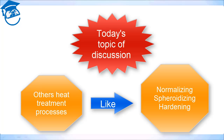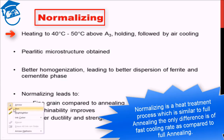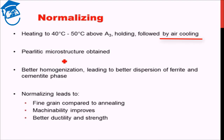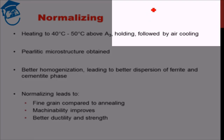Let's start our discussion with the process known as normalizing. Normalizing is a kind of heat treatment process which is similar to full annealing. The difference is that the cooling rate is quite fast in normalizing compared to full annealing. Full annealing was carried out with furnace cooling, whereas normalizing is cooled in air, and air cooling is faster than furnace cooling.